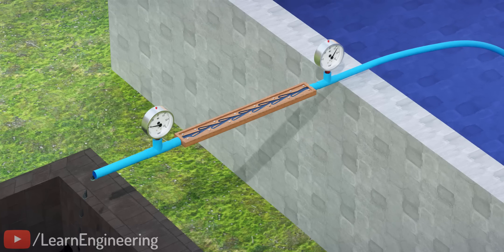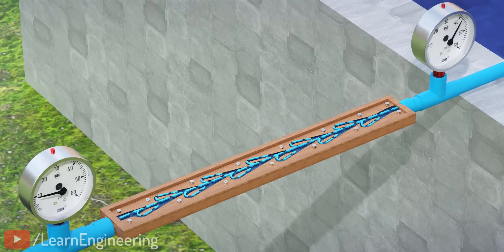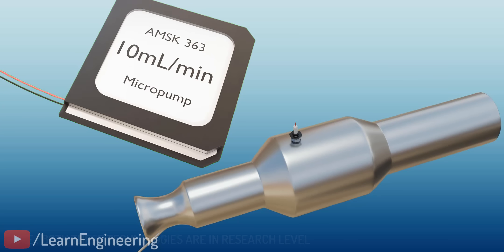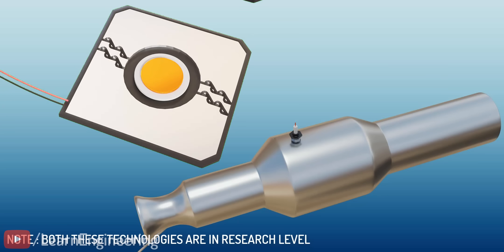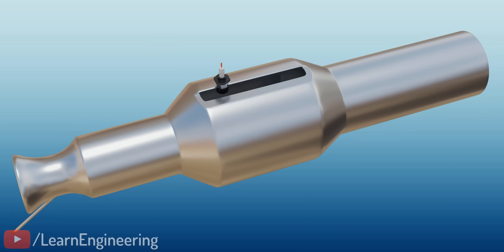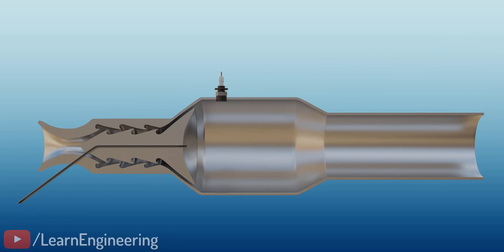The Tesla valve cannot block the flow completely, but this single-piece valve is highly durable, since it provides more resistance to the flow in one direction without any moving parts. It has found research applications in microfluidics and pulsejet engines. It is used along with a micropump to deliver fluid in very small quantities, as small as 3 milliliters per minute. Model-valveless pulsejet engines use the Tesla valve to replace the reed valve in conventional pulsejet engines.